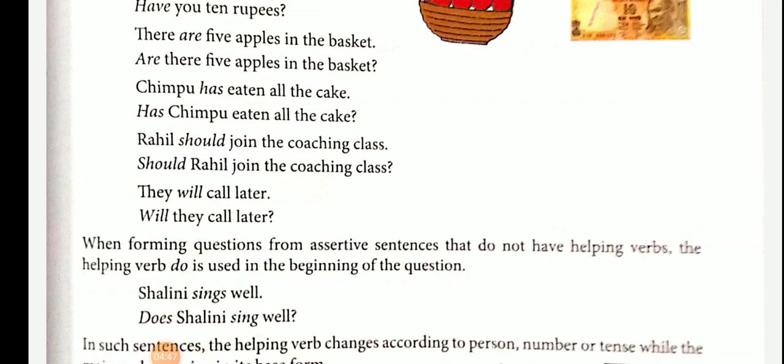Now, certain sentences that have helping verbs — also called auxiliary verbs — like is, am, are, have, has, had, was, were, the question starts with the helping verb. Similarly, in sentences that have modal auxiliaries like can, may, will, should, etc., the question also starts with the modal auxiliary.